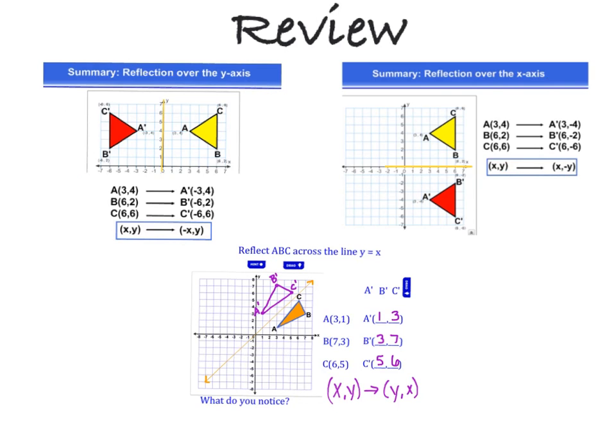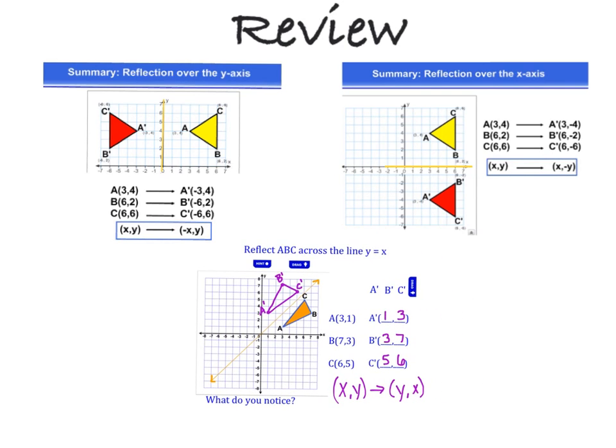And our final one that we saw in class yesterday was what happens if we reflect a figure over the line y equals x. So we drew our line y equals x on here and then we took each of our vertices and we moved them an equal distance from that line of reflection and we found out that when we did that we ended up with a rule that tells us that xy becomes yx.